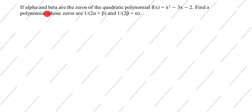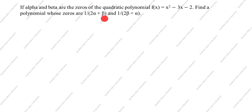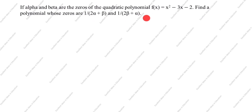If alpha and beta are the zeros of the quadratic polynomial f(x) = x² minus 2x minus 2, find a polynomial whose zeros are 1 divided by (2 alpha plus beta) and 1 divided by (2 beta plus alpha). We need to find this quadratic polynomial.